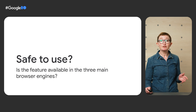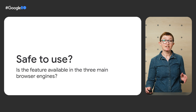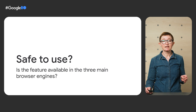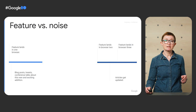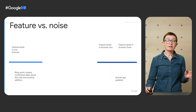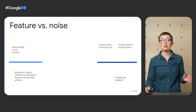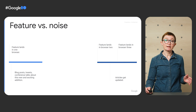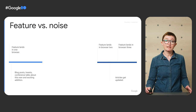For most developers, the time a new feature is considered safe to use is once it's landed in the three major browser engines: Chrome, Firefox, and Safari. Yet what we tend to see is a timeline where we get a lot of noise about a thing at a point where it isn't usable, and sometimes very little announcement when it actually lands everywhere. By that point, it's old news, and the developer influencers have moved on to the next shiny thing.